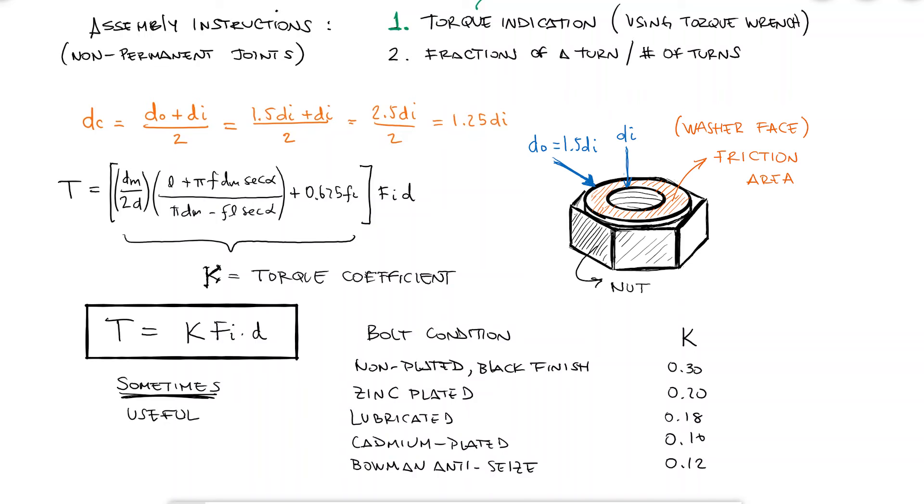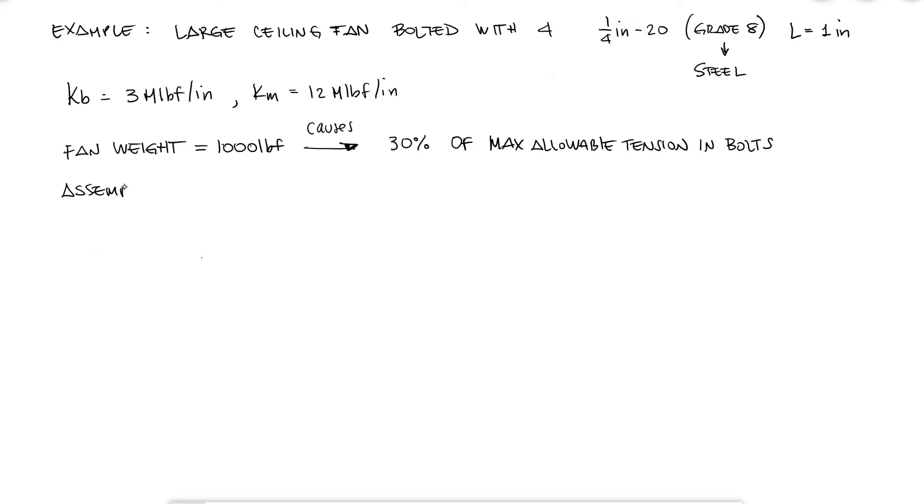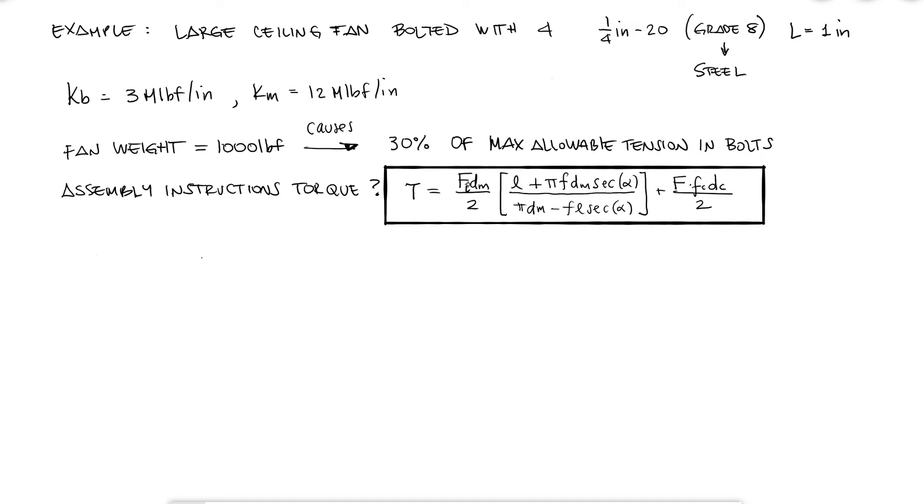Let's assume a large ceiling fan, like those you would see at some gyms, is being bolted to a steel beam on the ceiling. We are using four 1/4 inch 20 grade 8 bolts, and we already calculated that the bolt stiffness of each bolt is 3 mega pounds per inch, and that the member stiffness, including the steel plate, ceiling fan base, and two washers, is 12 mega pounds per inch. These values would be obtained following the procedure we covered during the last video. If we know that the fan's weight causes each bolt to be subjected to 30% of the maximum axial load that they would be able to resist, what is the maximum torque you would suggest using to tighten the nuts of each bolt, so that the total load in them will not exceed the maximum allowable axial load?